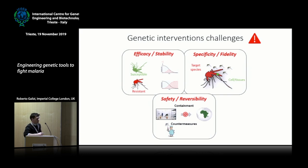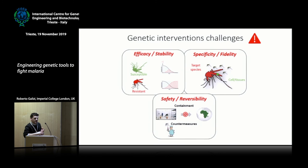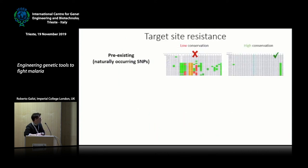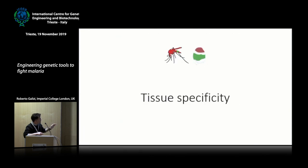I want to spend the last part of this talk showing some of the work we're doing recently on engineering countermeasures to gene drives. The gene drive is built to be released in small numbers and propagate in a population on its own — it's not meant to be controlled. But obviously people are worried about this, and they're asking whether we as scientists can do anything to stop it eventually. I'll ignore genetic resistance for now and move to these countermeasures.